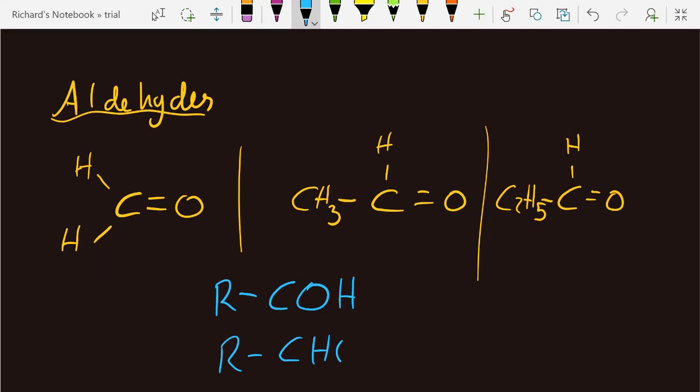By tradition, if you put the H before the O, then that tells you it's an aldehyde. Don't forget, that's an alkyl group. So this is the general formula for the aldehydes.